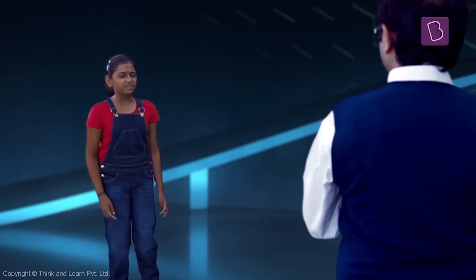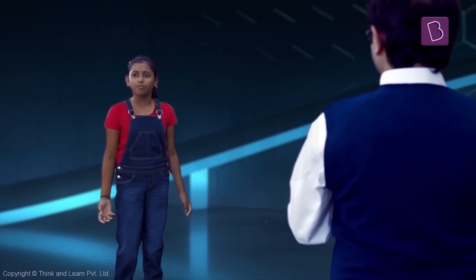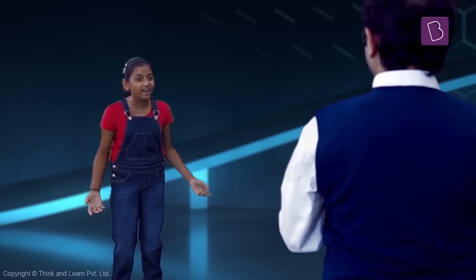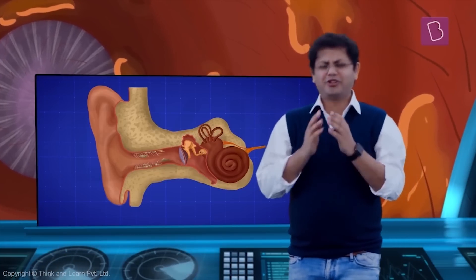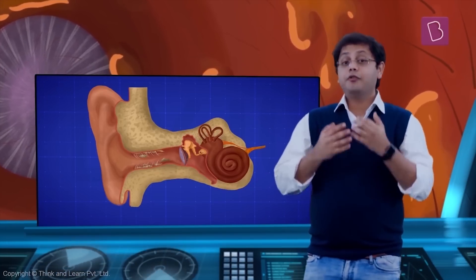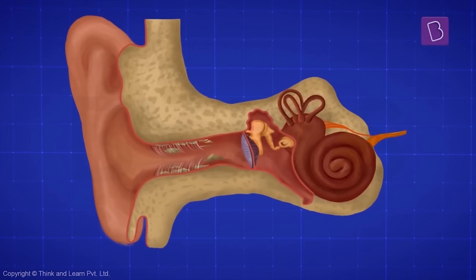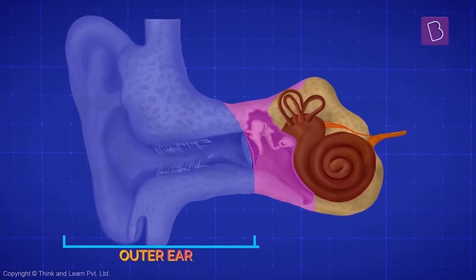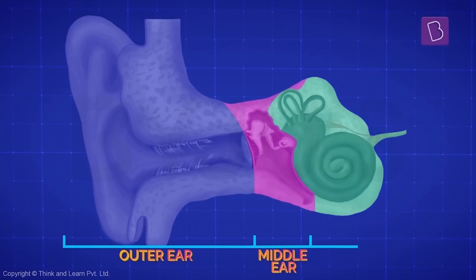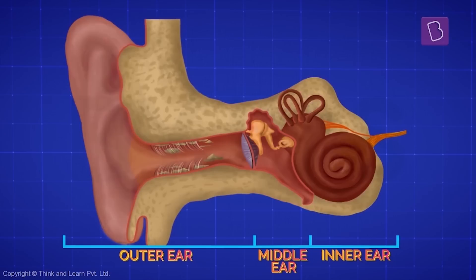Outer ear — does that mean that we have more than one kind of ear? Of course not. You see, for our convenience to understand the human ear, we actually study it in three parts: the outer ear, the middle ear, and the inner ear. These things — the flaps of the ear, along with the tube up ahead — together form the outer ear, as you can see here.